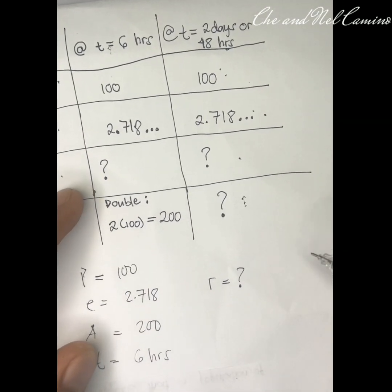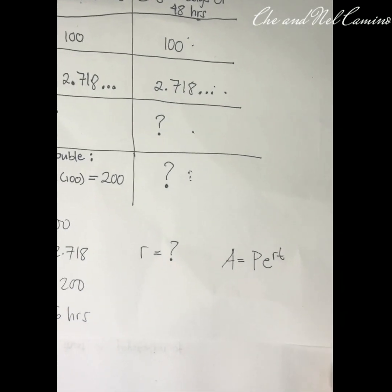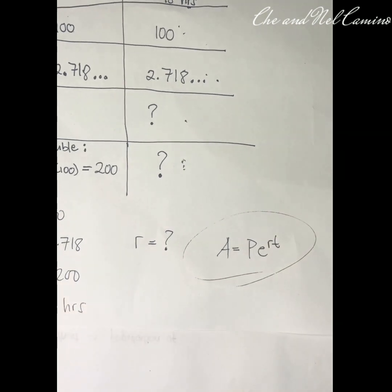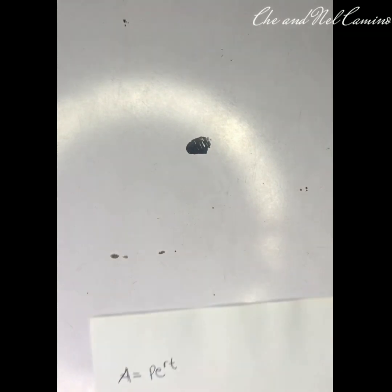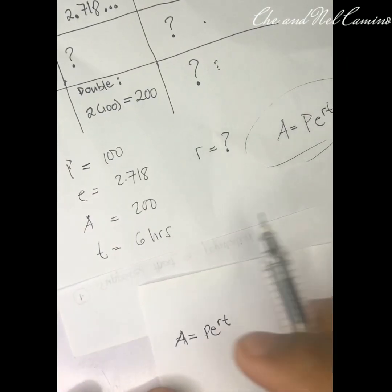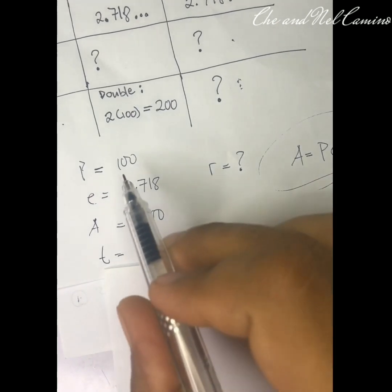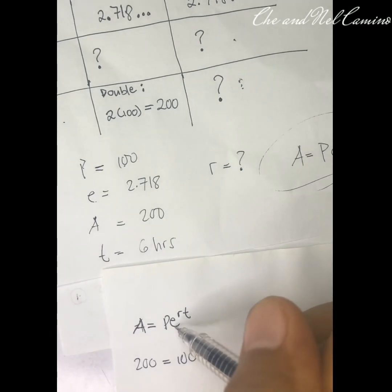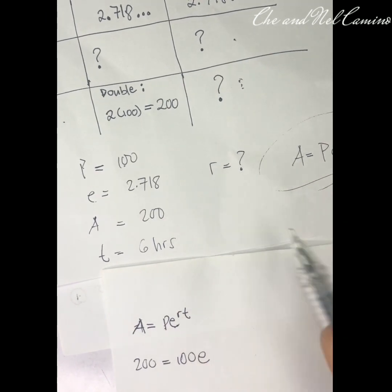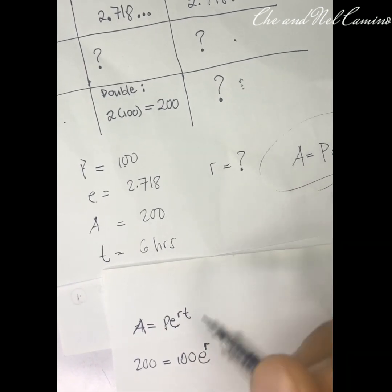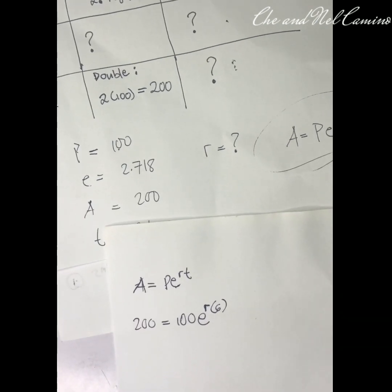To find the value of R, we apply the formula A equals P times e raised to the power of R times T. Substituting the known values: 200 equals 100 times e raised to the power of 6R. We now have our equation set up and will proceed to solve it.